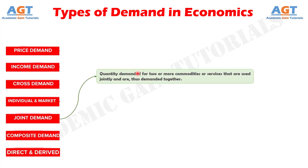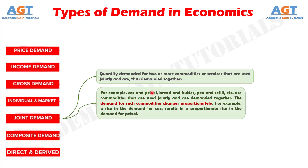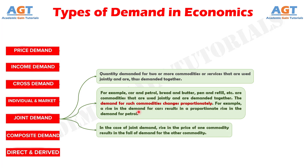Joint demand is the quantity demanded for two or more commodities that are used jointly and thus demanded together — for example, car and petrol, bread and butter, pen and refill. The demand for such commodities changes proportionately; a rise in demand for cars results in a proportionate rise in demand for petrol. However, in joint demand, a rise in the price of one commodity results in a fall in demand for the other — an increase in the price of cars causes a fall in demand for both cars and petrol.